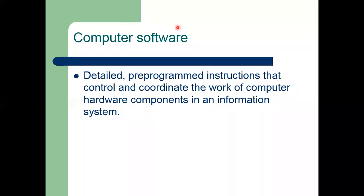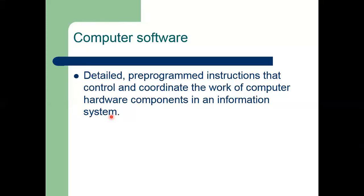Software consists of detailed program instructions that control and coordinate computer hardware components in an information system. Computer software is like an interpreter — it converts human language, that is high-level language, into machine-level language, which is binary (1s and 0s), so the hardware can process instructions. In return, it reconverts that low-level language back into high-level language that humans require, whether in the form of mathematical calculations or textual and symbolic output.